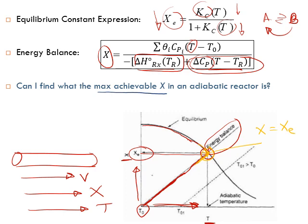At the point where X equals Xe, the reaction cannot proceed further because the rate drops to zero — the forward rate of reaction equals the reverse rate. Therefore X will not increase, temperature will stay the same, and the equilibrium conversion will stay the same. This is the maximum conversion achievable under these given conditions.